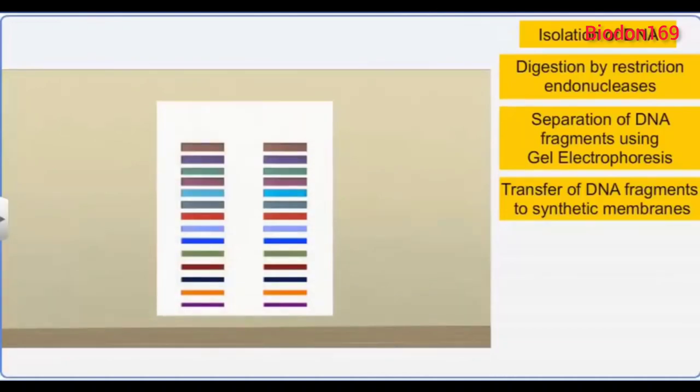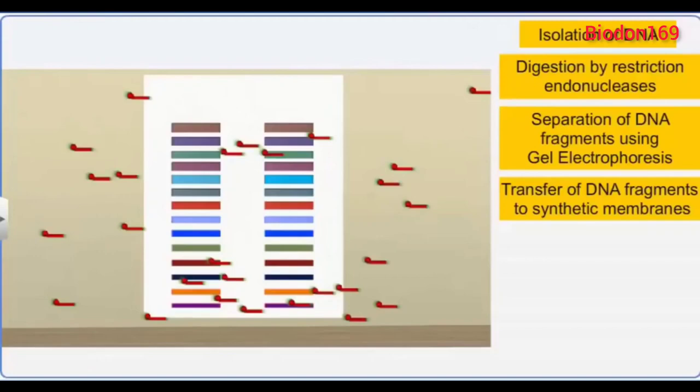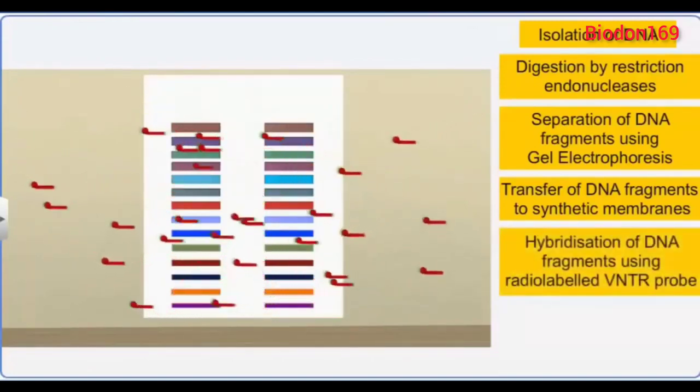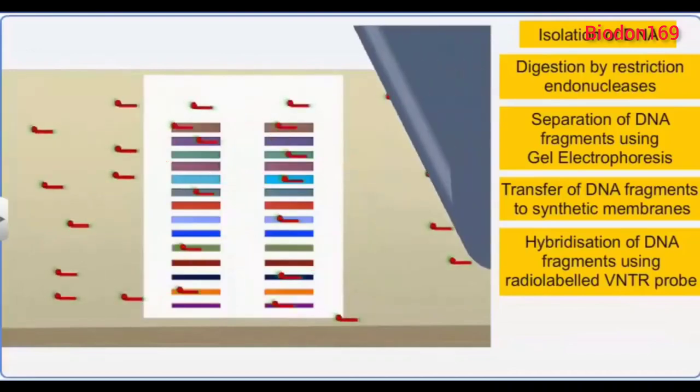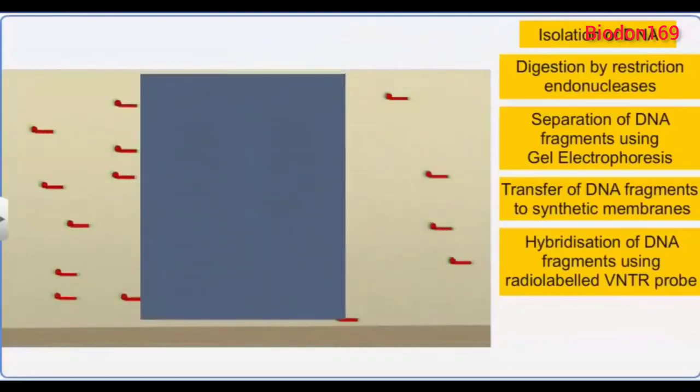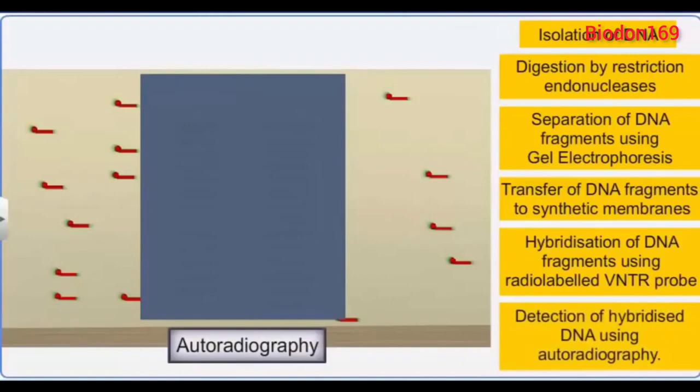This step is followed by the hybridization of the DNA fragments using a radio labeled VNTR probe. Finally, the hybridized DNA fragments are detected by a technique called autoradiography, conducted using an X-ray film.